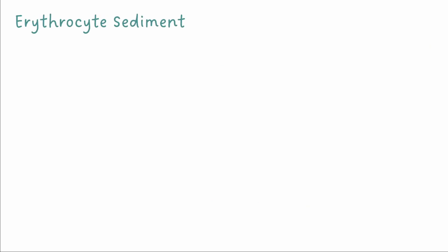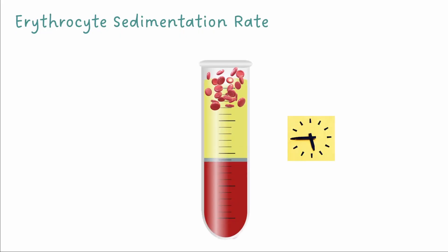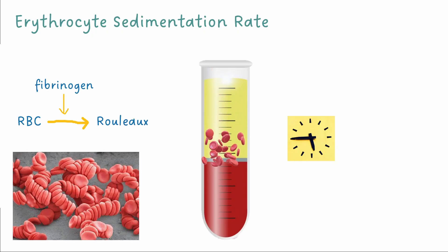ESR is the rate at which red blood cells fall in a test tube over 1 hour. When there is inflammation in the body, excess fibrinogen will be present in the blood which encourages red blood cells to stick together forming Rouleau which fall faster. So a high ESR represents more inflammation.